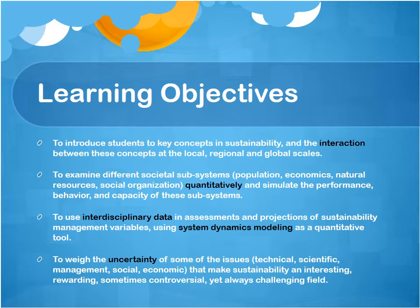We're going to try to quantify uncertainty — it's one thing to know you don't know something, but if you know it falls within some uncertainty range, you have a much better idea of how to handle it. We'll look at this with a series of examples across a series of topics. So the learning objectives are: interactions, quantitative analysis, interdisciplinary system dynamics modeling, and uncertainty.